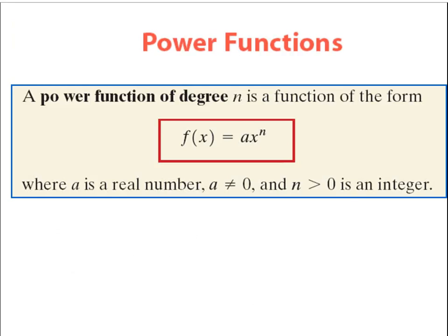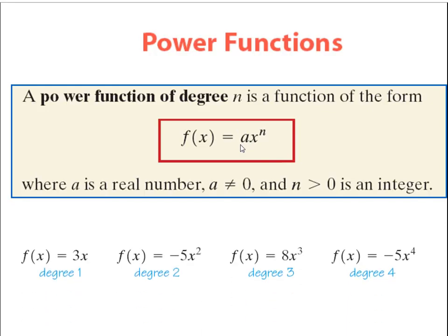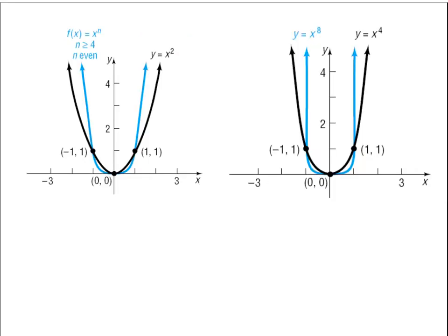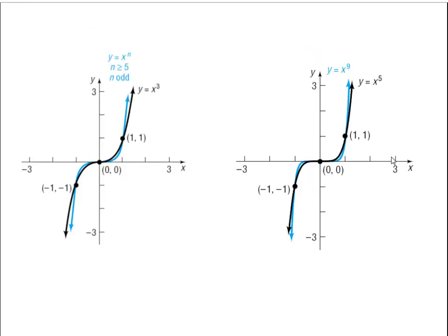The first tool of analysis is what we call end behavior. Before discussing end behavior, the author introduces power functions — basically a monomial: a variable x raised to a power with a coefficient. If a power function has an even degree, it looks like a parabola at the ends of the graph — both ends go in the same direction. If the power function has an odd degree, it goes off in different directions at the ends.